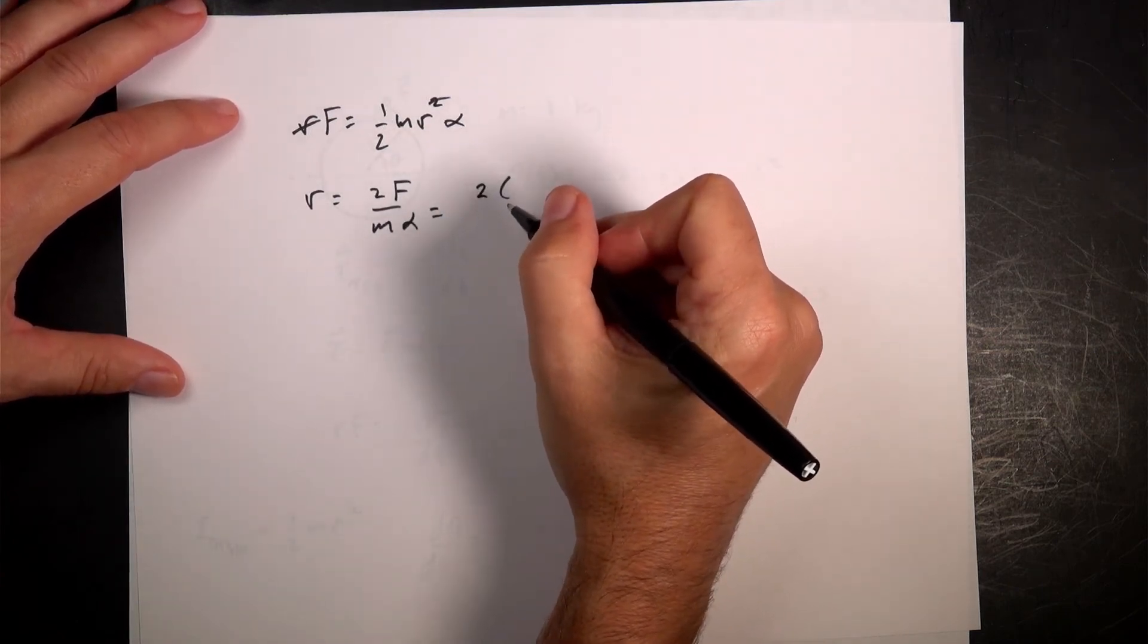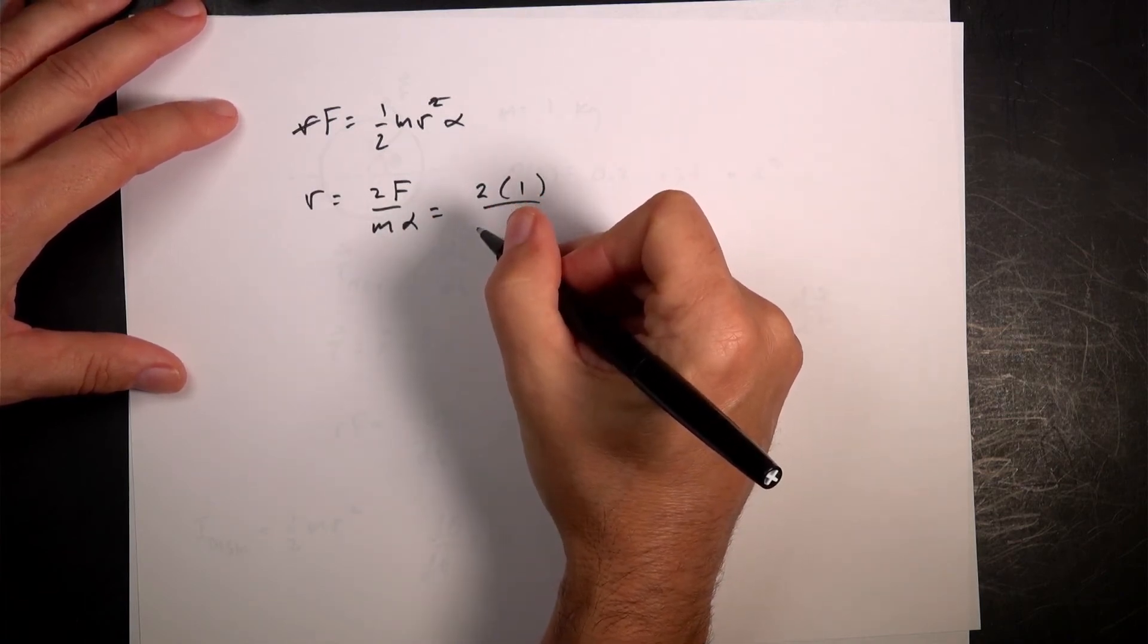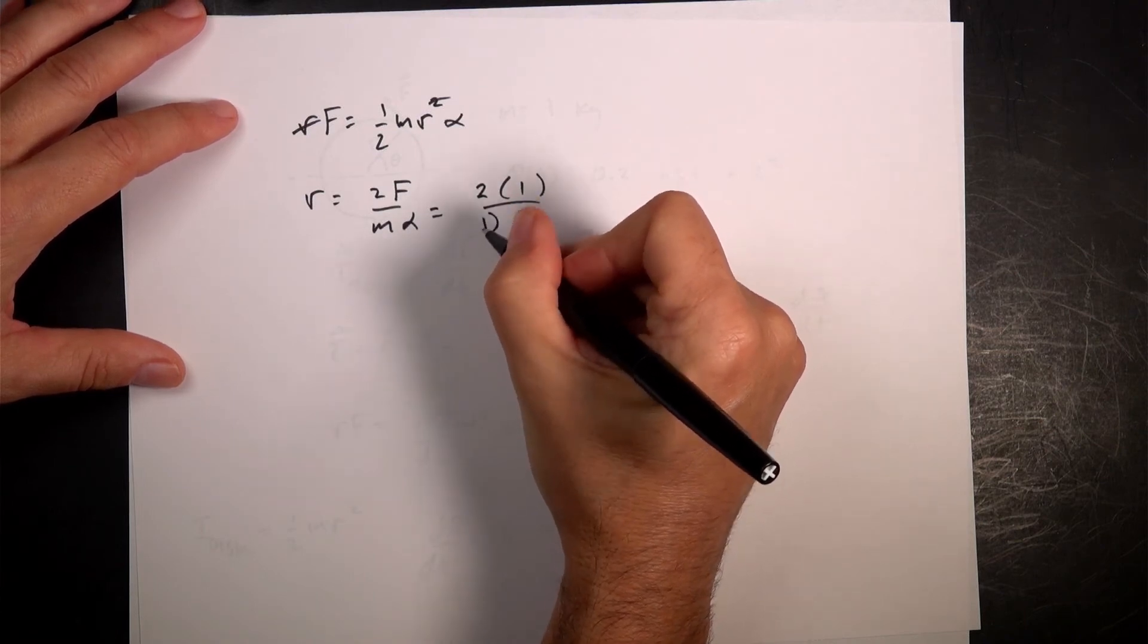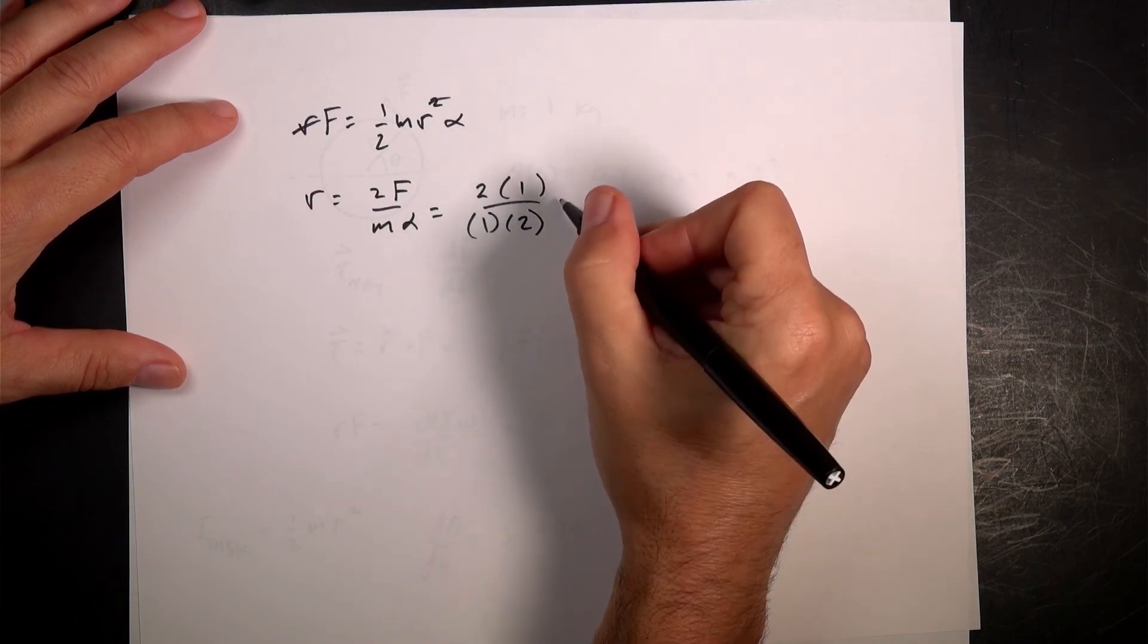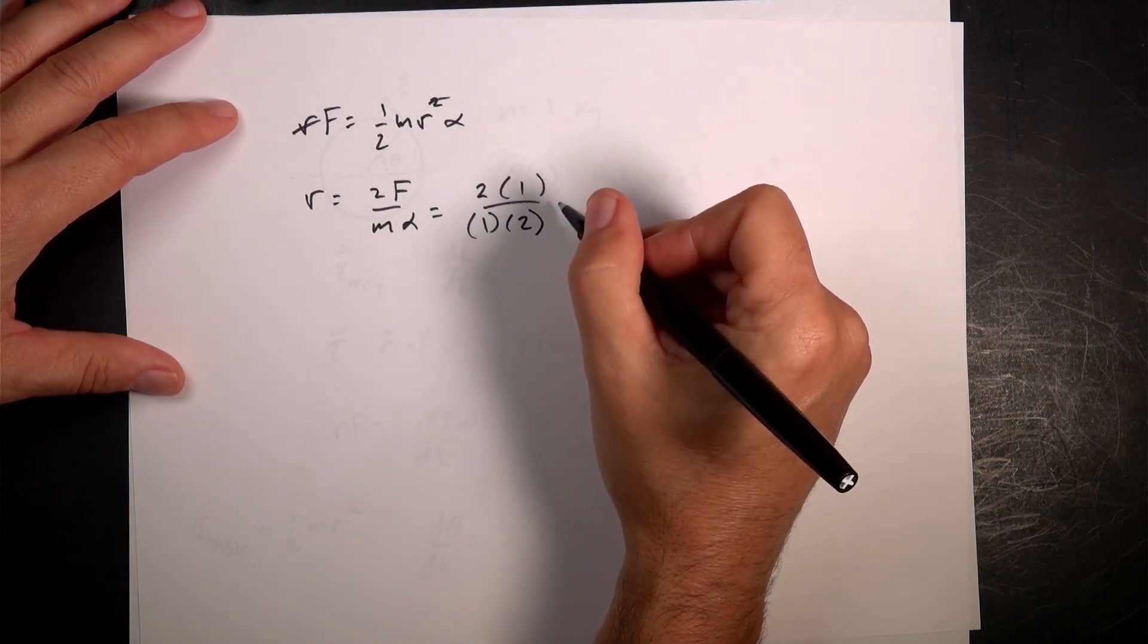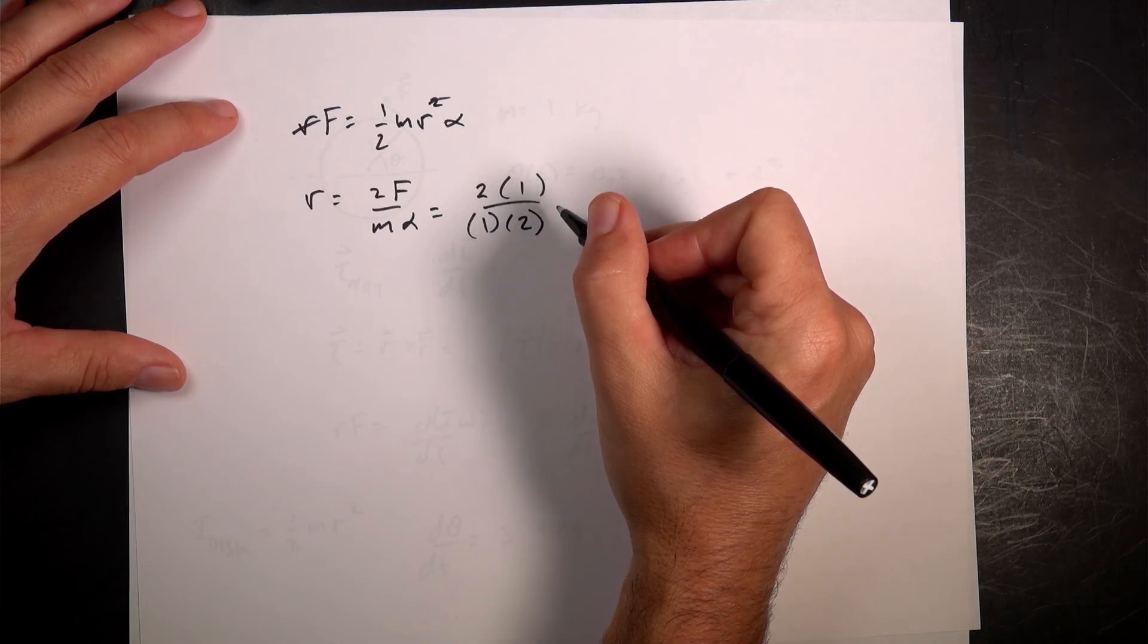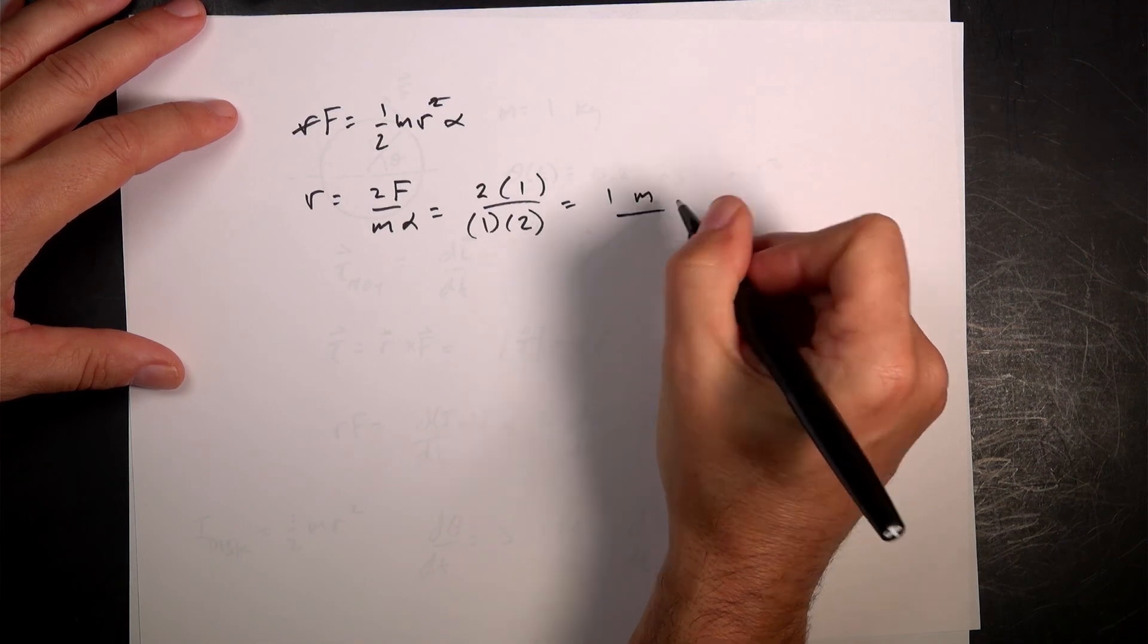So now we can put it in our values. 2 times the force was 1. The mass was 1. And this was 2. That worked out nice. I assume the angle, the equation was in, where t is given in seconds, theta is given in radians. Okay, good. So I get 1, 1 meter. The end.